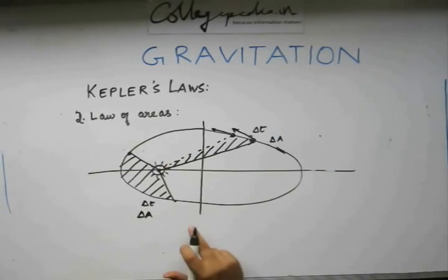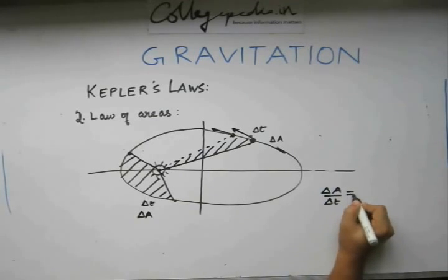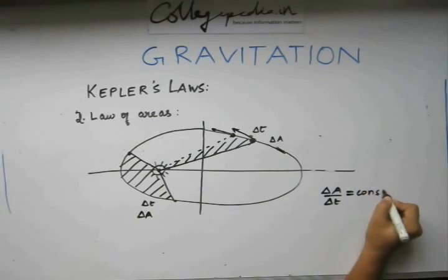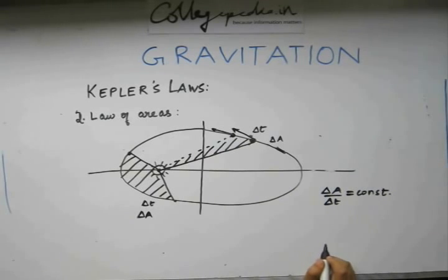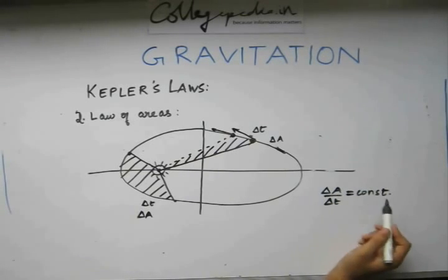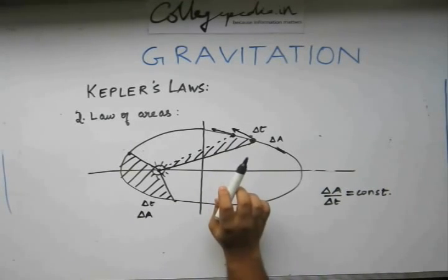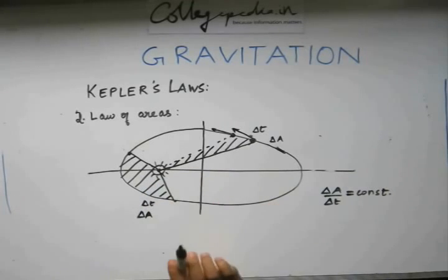From this, what we conclude is this, which is the rate of change of area is a constant or in other words the change in area is proportional to the change in time. Hence, the planet will sweep out equal areas in equal intervals of time. Let us prove this statement mathematically so that we look at it completely.